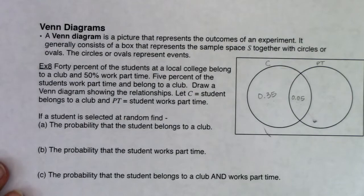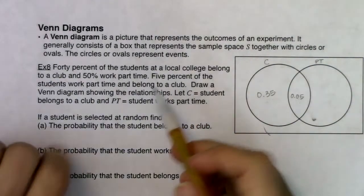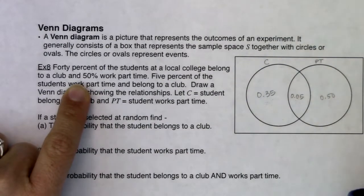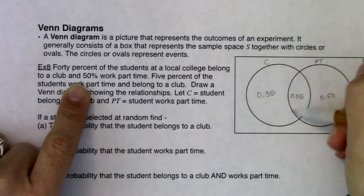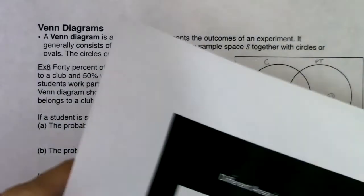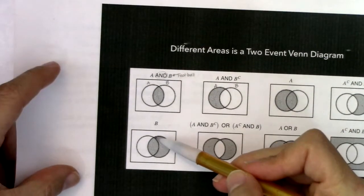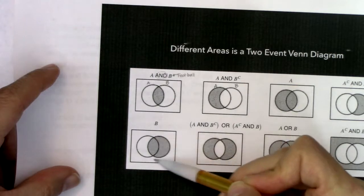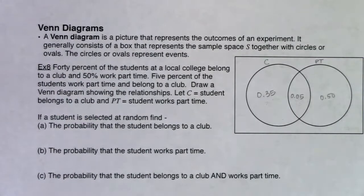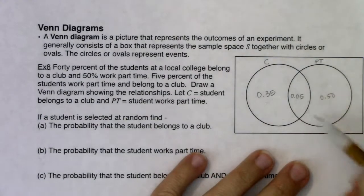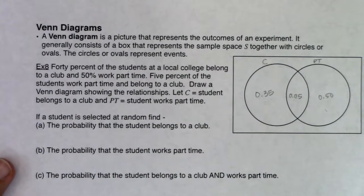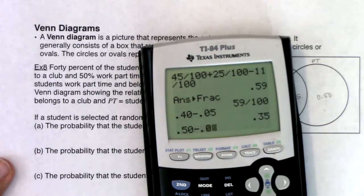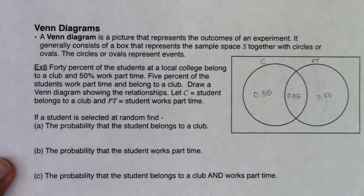Now for part-timers: 50% work part-time means the entire right circle must add up to 50%. The most common error is putting 50% in the right moon only, which would make it 55%. So I take 0.50 minus 0.05, giving 0.45 for the right moon — those are students who only work part-time and don't belong to a club.